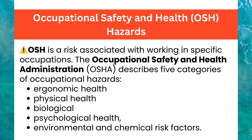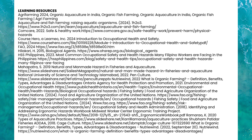Occupational Safety and Health (OSH): The Occupational Safety and Health Administration (OSHA) describes five categories of occupational hazards: ergonomic health, physical health, biological, psychological health, and environmental and chemical risk factors.